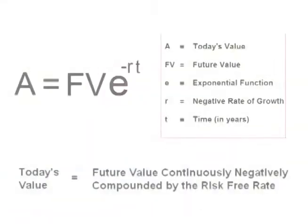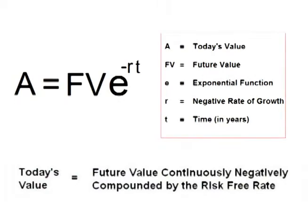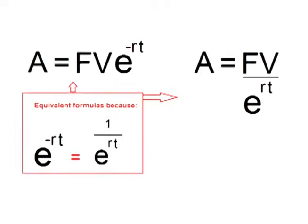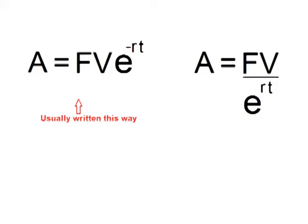To do this, one takes the future value of $1,000 and negatively compounds by the risk-free rate of 1.5%. This is called discounting to present value. Today's value equals the future value continuously negatively compounded by the risk-free rate. These formulas are the same. You will usually see it written as multiplied by a negative rate of return instead of divided by a positive rate of return because it makes more sense writing it that way. However, both equations are equivalent.